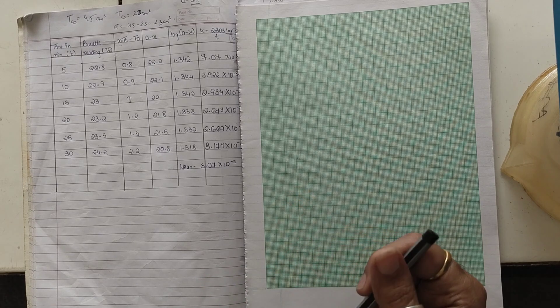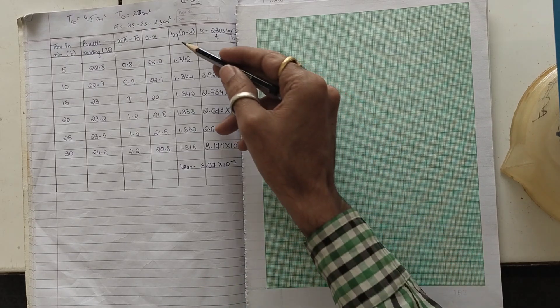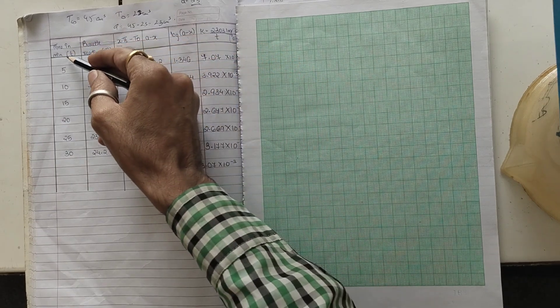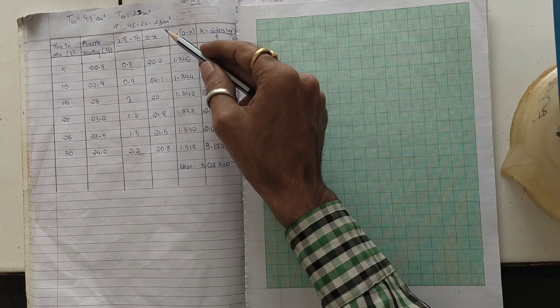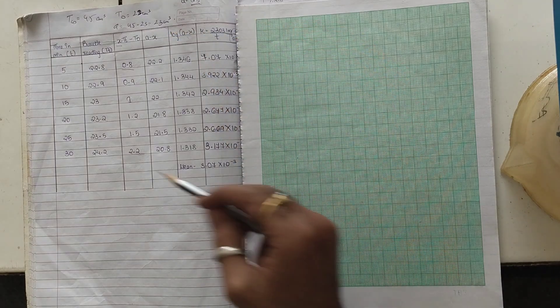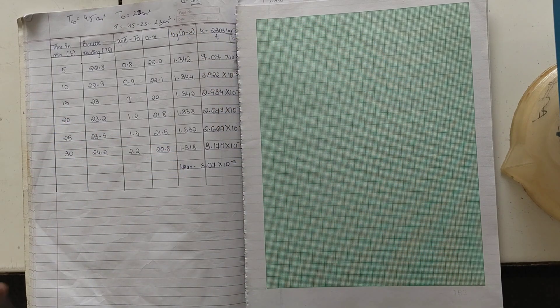The graph that has to be plotted is log of A minus X against T, that is time in minutes. Log of A minus X is along the Y axis and the time is going to be along the X axis.